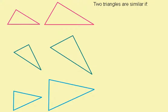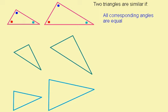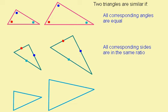Sometimes you may be asked to prove that two triangles are similar. There are only three cases to learn. If all corresponding angles are equal, then the triangles are similar. Or, if all corresponding sides are in the same ratio, the triangles are similar. You can see on these two triangles that the sides on this one are all double the length of the sides on this one, so these two triangles are similar.